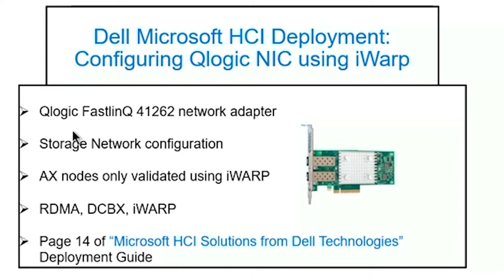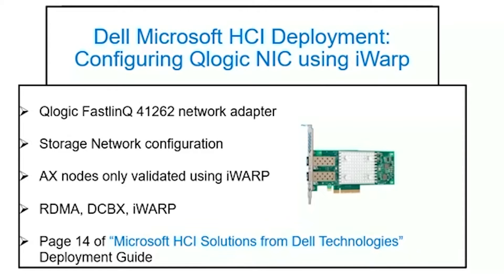We'll be exploring the settings for the QLogic FastLinQ 41262 network adapter. This configuration usually occurs before the cluster node OS has been installed. The NICs comprise the storage network element for the Microsoft HCI solution on Dell AX Ready Nodes. While the QLogic FastLinQ 41262 adapter on AX Nodes can use either the RoCE or iWARP network protocol, Dell EMC is only validated using iWARP with this adapter for their hyper-converged Azure Stack solution. We'll review the necessary settings for RDMA, DCBX, and iWARP. The information in this video can be found on page 14 of the Microsoft HCI Solutions from Dell Technologies Deployment Guide.